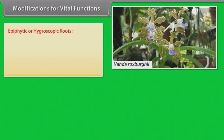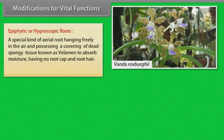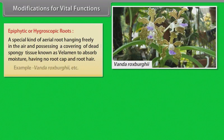Modifications for vital functions. Epiphytic or hygroscopic roots: A special kind of aerial root hanging freely in the air and possessing a covering of dead spongy tissue known as velamen, to absorb moisture, having no root cap and root hair. Example: Vanda, etc.